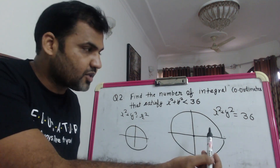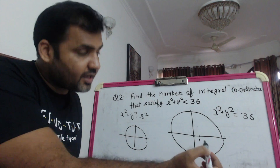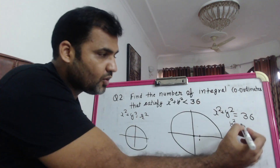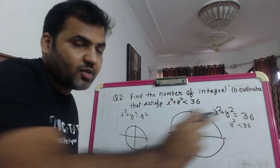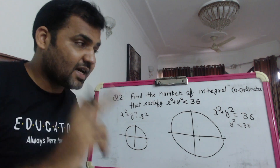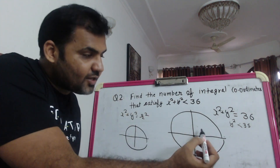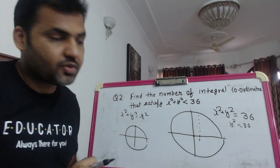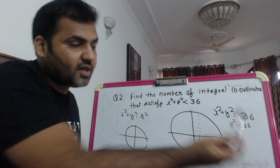If I put x = 1 in the equation, then y² must be less than 35. So what is the maximum value of y? y² should be less than 35. y can go up to 5, because 1², 2², 3², 4², 5² are all less than 35. Five squared is 25, which is less than 35. So y can be 1, 2, 3, 4, or 5. Six is not possible because y² would exceed 35.